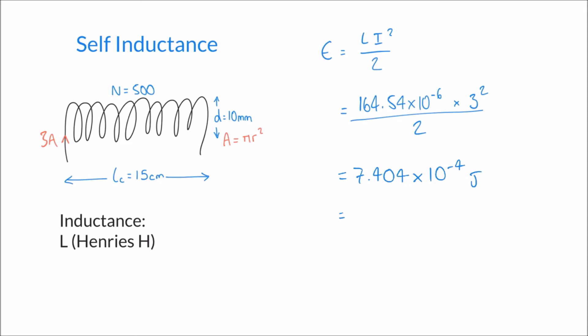We can rewrite 7.404 times 10 to the minus 4 as 740.4 times 10 to the minus 6 joules, and since 10 to the minus 6 corresponds to the micro prefix, that gives us 740.4 microjoules.